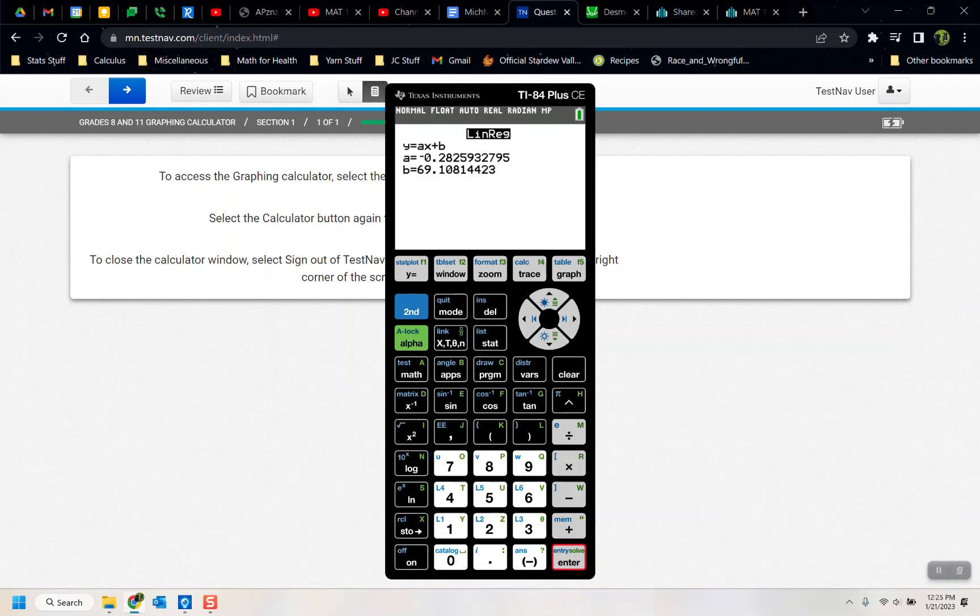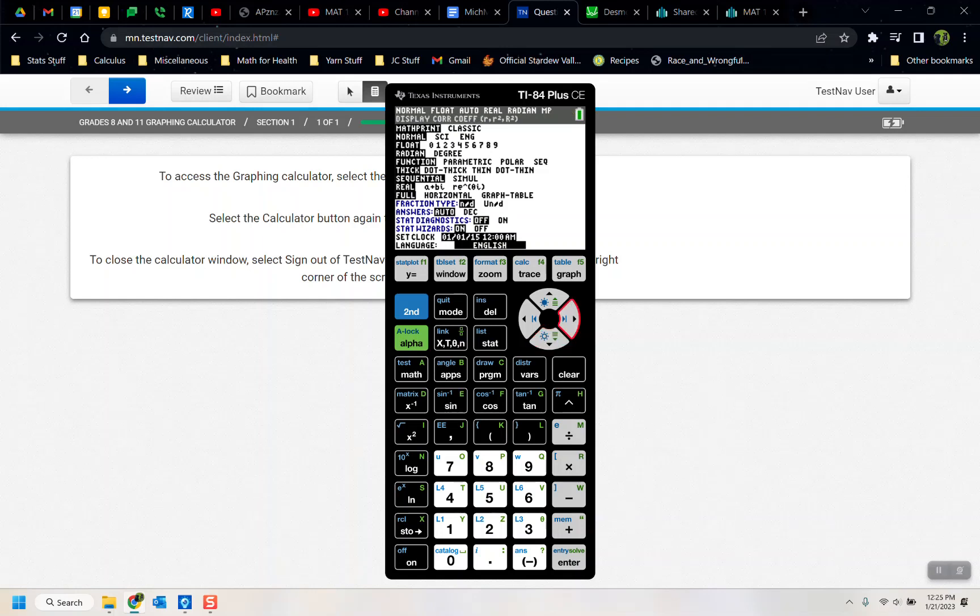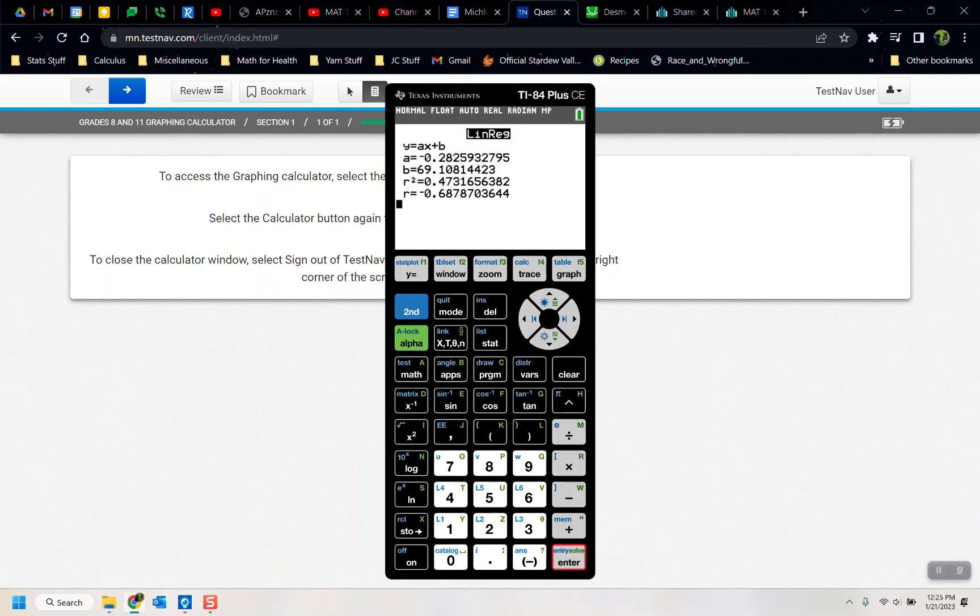But then, oh no, oh my stars, we don't have the correlation coefficient. Whatever shall we do? So if you go to mode, that mode button, and you go down about this way, where it says stat diagnostics, and see how it's off right there, we need it to be on. So I'm going to arrow over to the on and press enter. That should leave it on from now on. So now when I go to stat, calculate, number four, and press enter, when I calculate, there it is. There's the regression or correlation coefficient, negative 0.688 at the bottom. It should be on from this point on, but you have to turn it on one time.